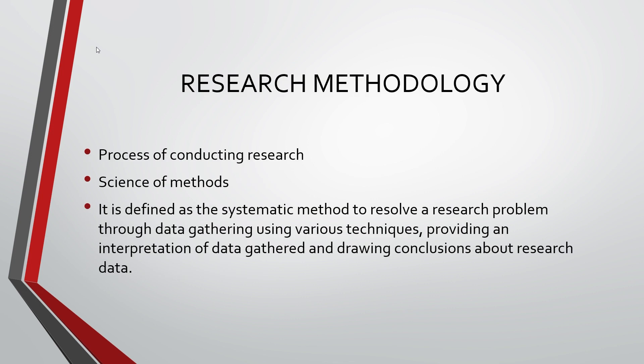Now we can go to what is research methodology. Research methodology is a science of methods — it's a process of conducting research. What is the difference between research method and research methodology? Research method refers to all the techniques used for conducting research, including observation method, interview, or attitude measurements. But research methodology not only describes the steps involved in conducting the research, but also justifies the choice of various methods, states the limitations, and brings out the presuppositions and consequences in conducting the research.